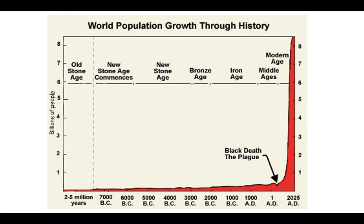So if we look at the human population growth over the past couple hundred thousand years, first modern humans appeared about two to three hundred thousand years ago. And since then the population has been slowly growing throughout the different ages. You can see the Black Death comes around in the 1200s or 1500s or so. And then in the last 200 years, the population has absolutely boomed, and there is a reason for that.